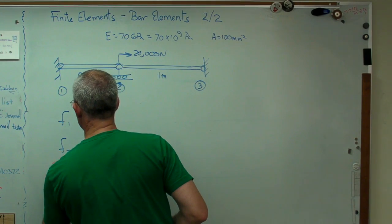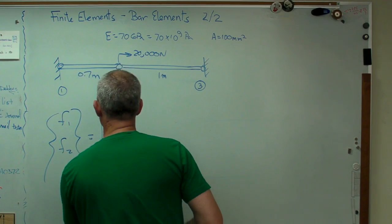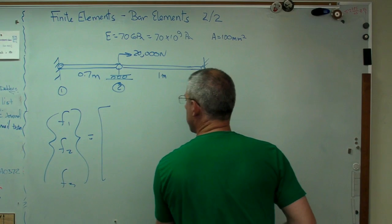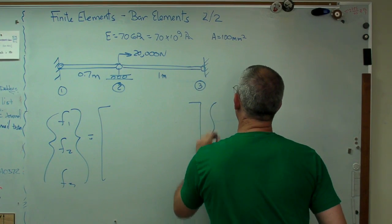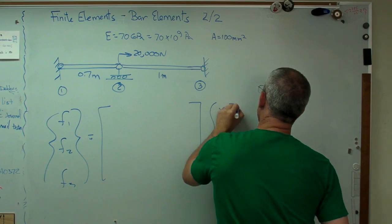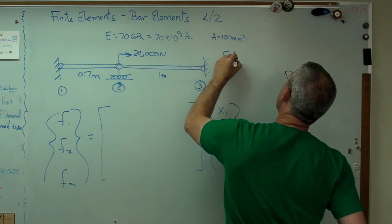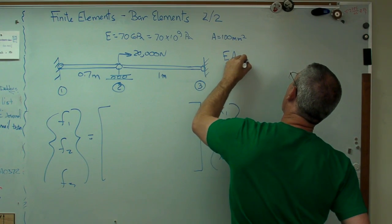So here's what it's going to look like. F1, F2, F3. That's my global force vector. I'll put in the numbers there in a second. Now, E and A doesn't change. L1, 0.7 there. I'm going to need to know that number here.